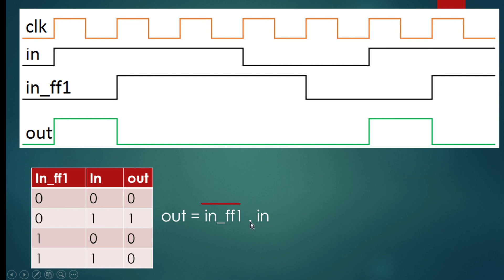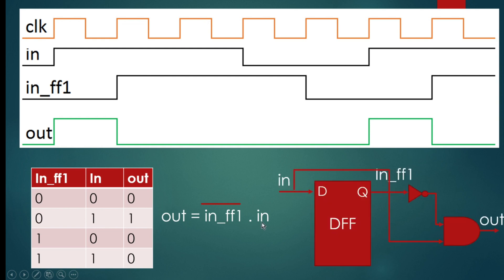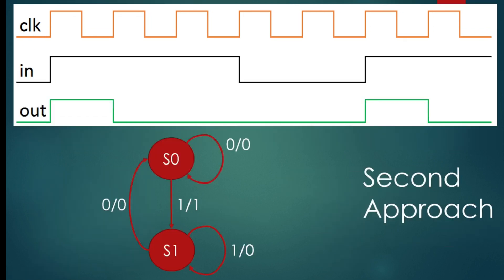This will be the final expression for the out signal. It is very easy to draw its logic: 'in' goes to the input of the flip-flop which gives output as 'in_ff1'. As per the expression out = in AND (NOT in_ff1), we need to put a NOT gate, and this AND gate will drive the out signal.